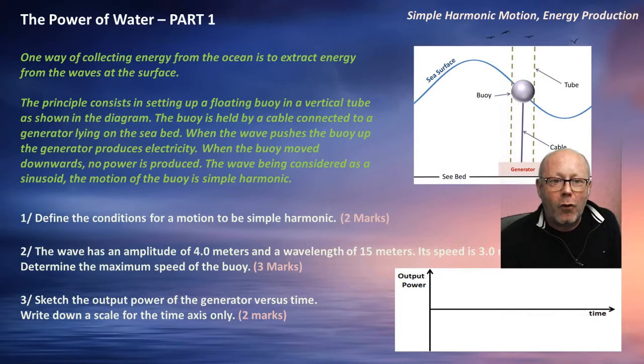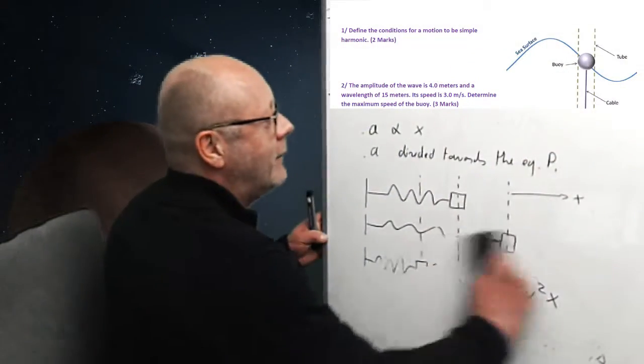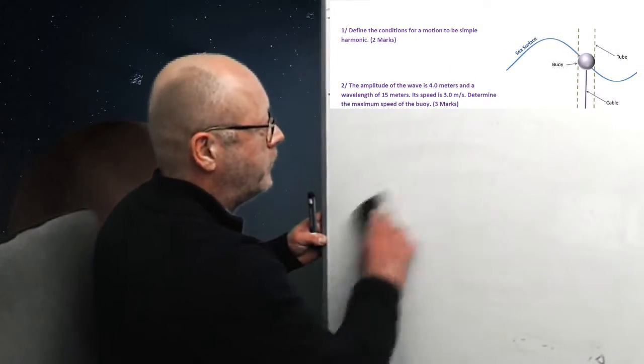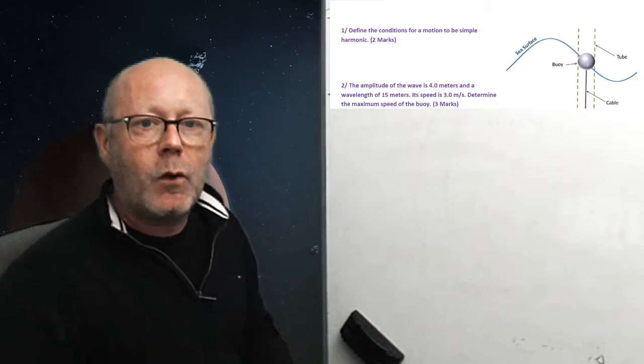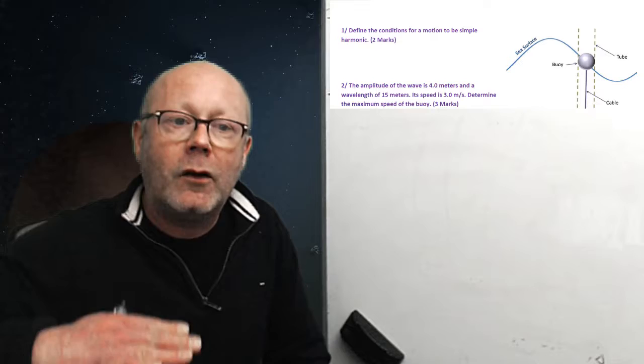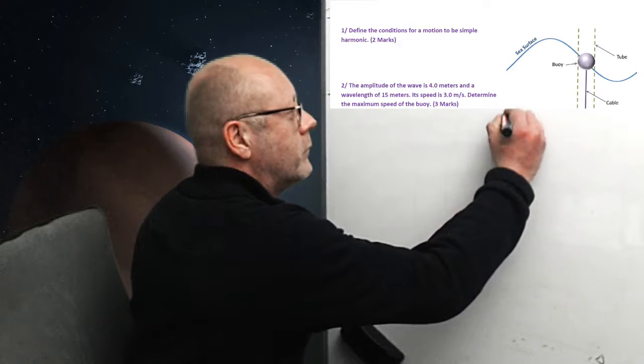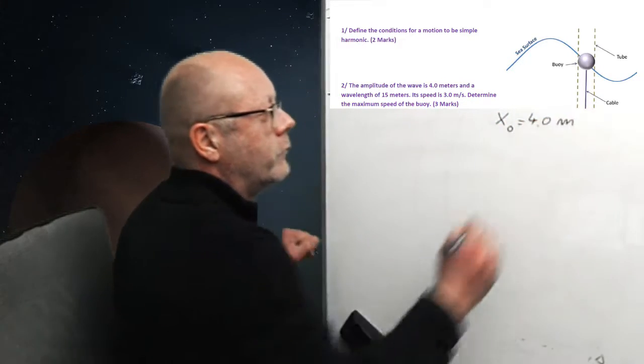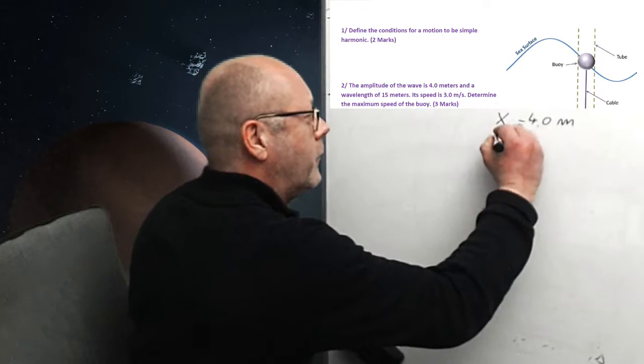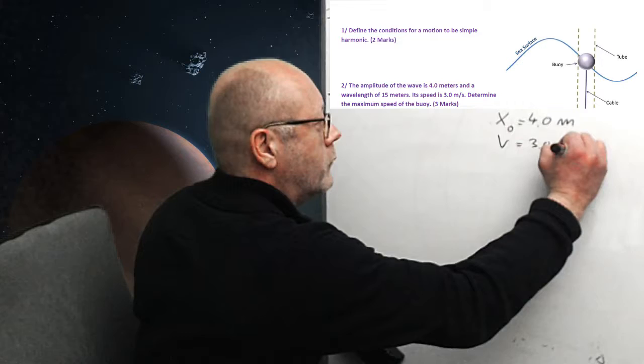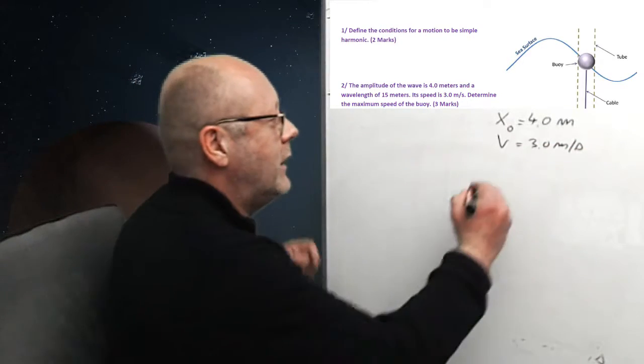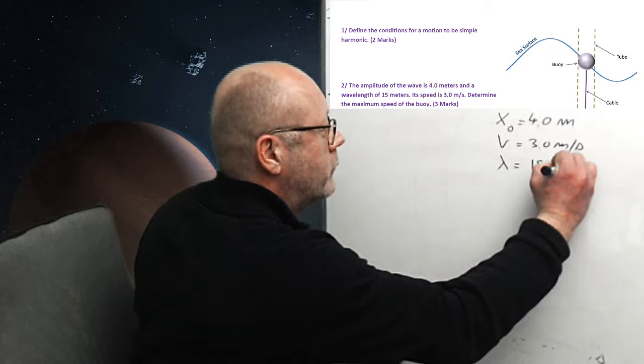The wave has an amplitude of 4 meters and a wavelength of 15 meters. Its speed is 3 meters per second. Determine the maximum speed of the buoy. Ok. So, let's note this in front. We have the amplitude of the wave is 4 meters. So, the buoy is going to go up and down with the wave. Right? So, the maximum displacement for the buoy will correspond to the amplitude of the wave. The velocity of the wave is 3 meters per second. And the wavelength is 15 meters.